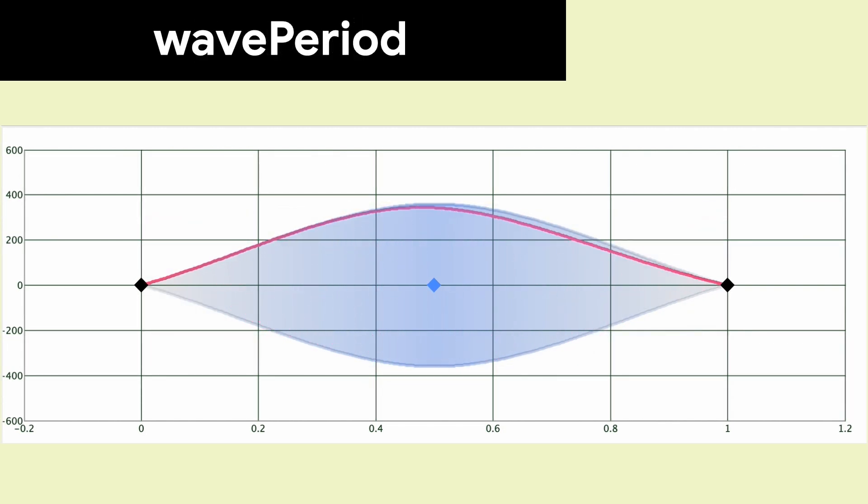wavePeriod affects the wavelength, but also the values are normalized so that you can pick a value of two and it adds two cycles, making it very easy to know how many oscillations you will get. Simply count the number of periods.